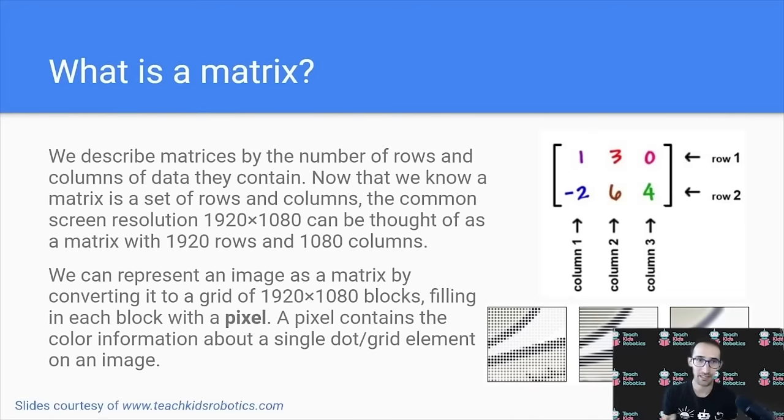What is a matrix exactly? A matrix is simply what we call a set of rows and columns. That, if we consider screen resolution, can be like 1920 by 1080. A matrix with 1920 rows and 1080 columns.